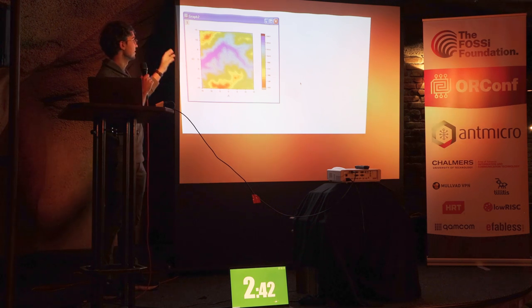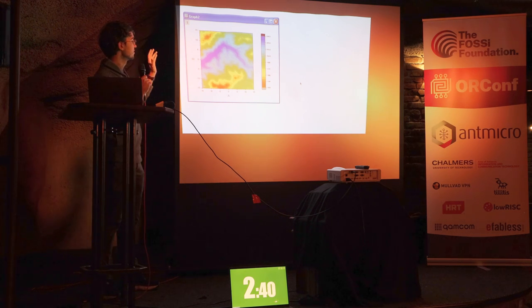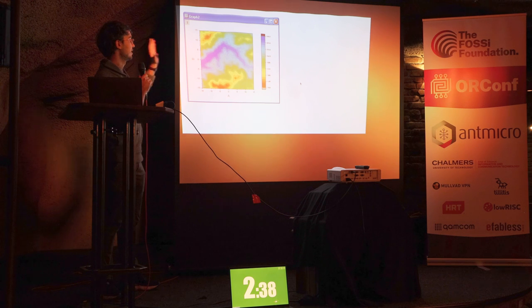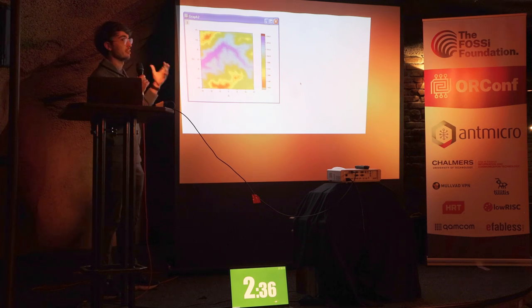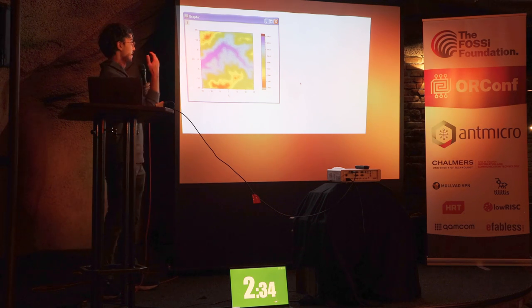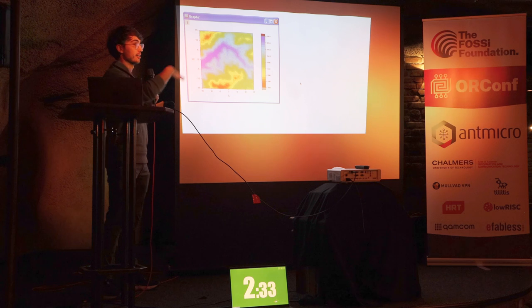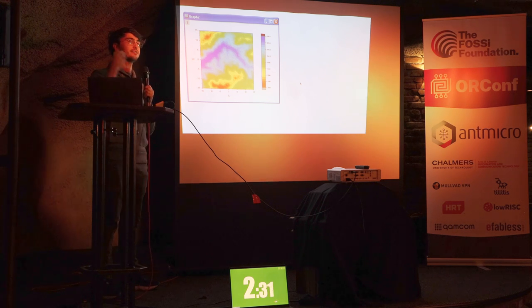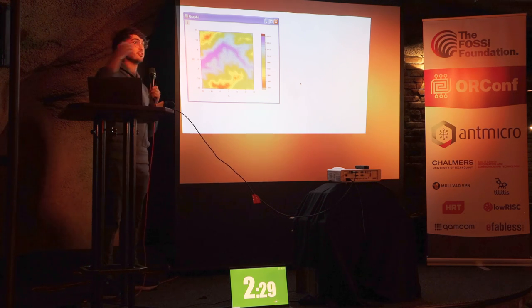What we have here is a nice little topology. What's interesting is that in a two-dimensional image, we have three dimensions of representative information — the third being the color map. It's a nice mapping from this image into a mental model.